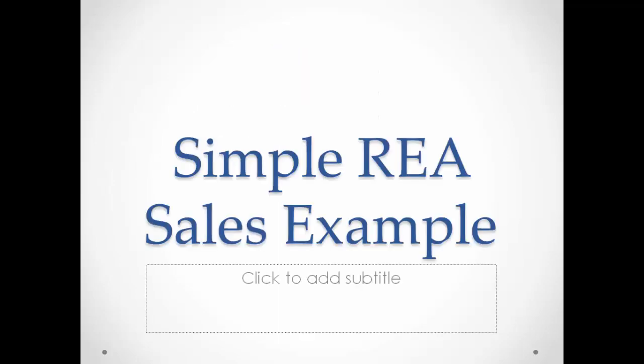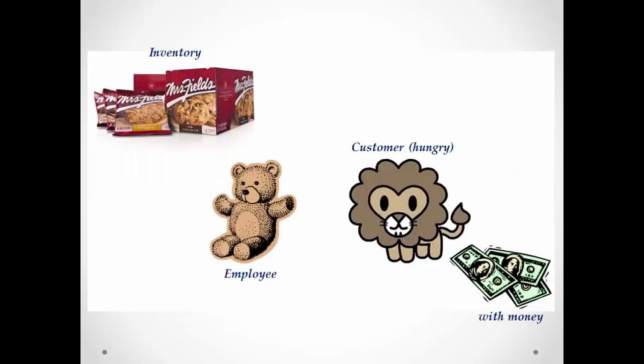To give you a better idea of how the REA pattern works, we're going to give a simple sales example. In this example, that stuffed bear is our employee, the lion is our hungry customer. The lion has money, which is important, and we're selling cookies — so that's our inventory.